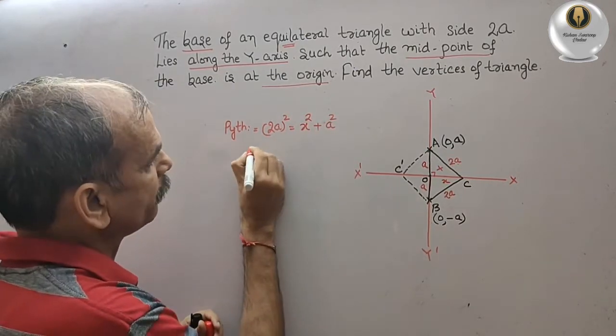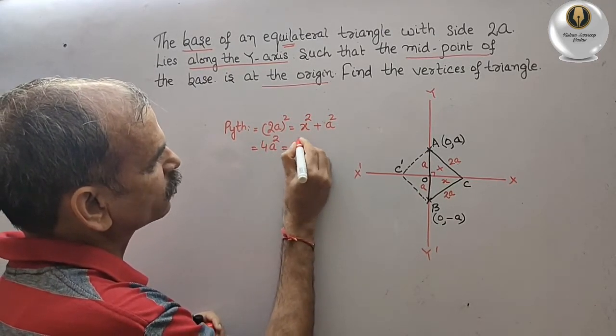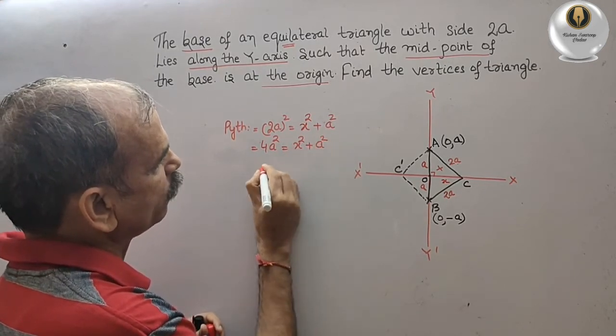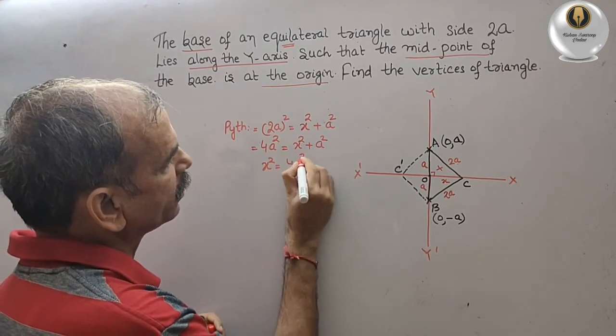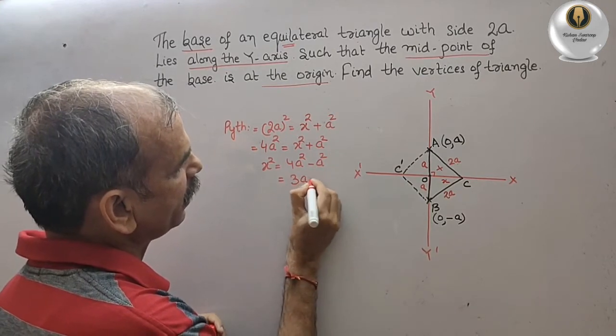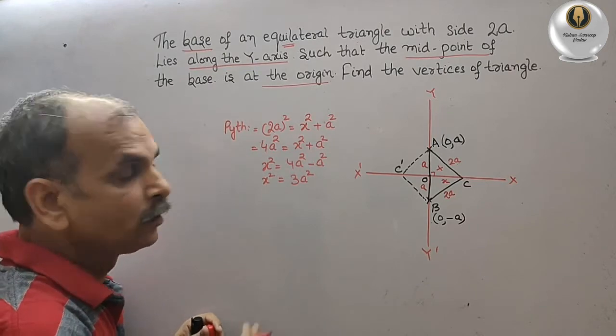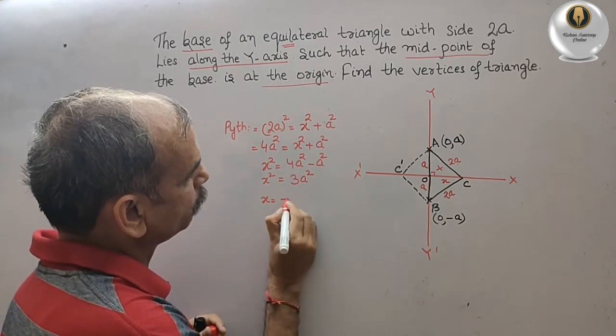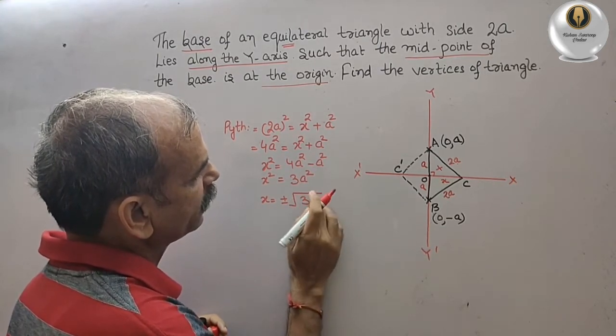So what will happen? We can say 4a square minus a square, that is your 3a square. That is X square. So what is your X now? We can say X is equal to plus minus root 3a.